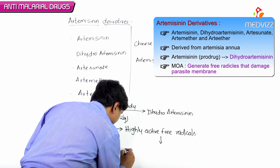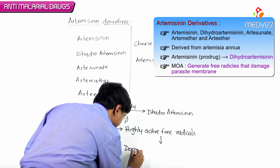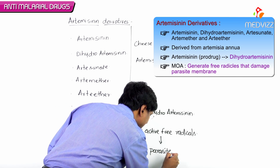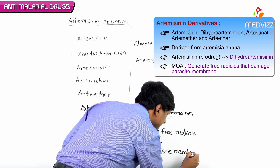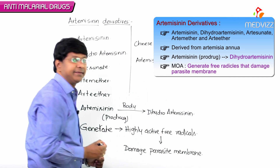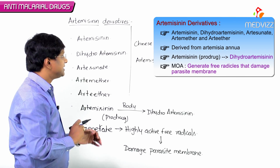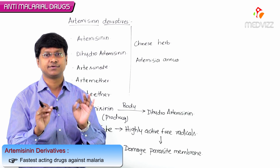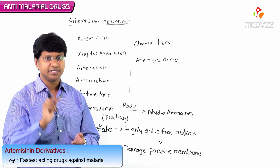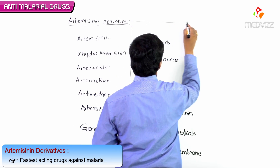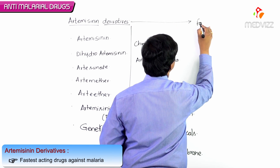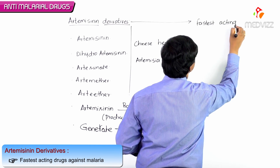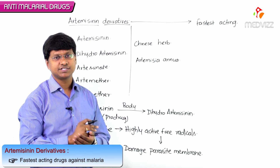The highly active free radicals generated by artemisinin derivatives will damage the parasite membranes. Another important point is that these drugs are the fastest-acting drugs against malaria — this is a key exam point to remember.